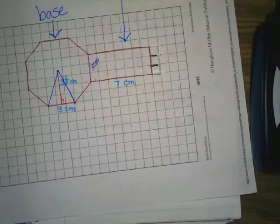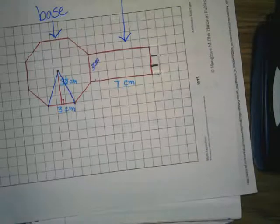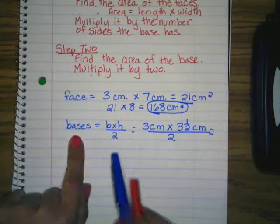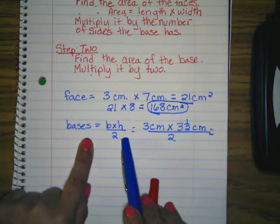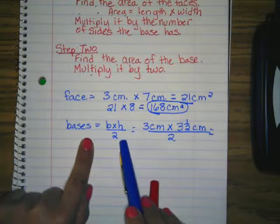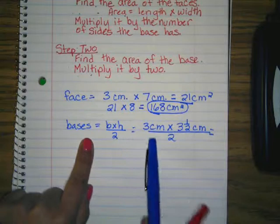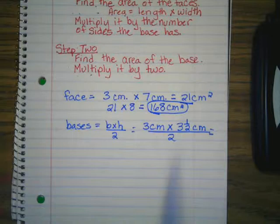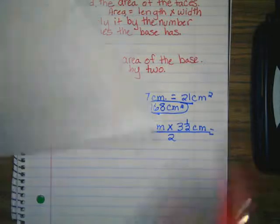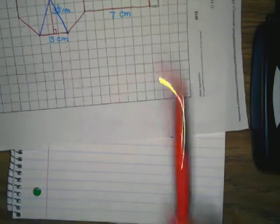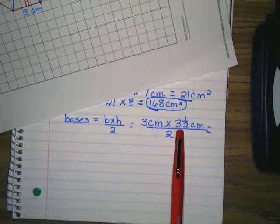Alright, so when we left off, guys, we found—we wrote down our formula to find the area of our base, and then we wrote out the numbers we were going to use. So we said our base was 3 centimeters on our octagon, and the height was 3 and a half, and then we know we need to divide it by 2 because it's a triangle, right?